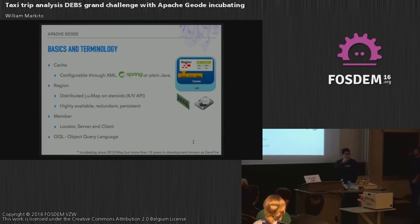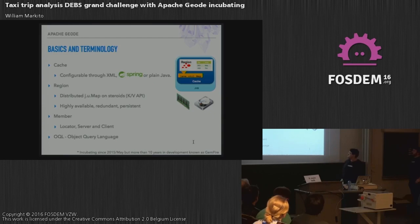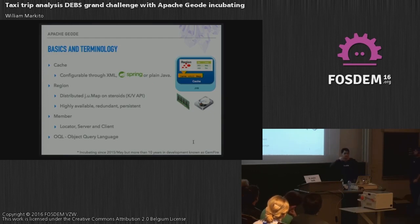Another way to summarize what Geo is: Geo is an open source project donated to ASF, it's currently incubating. The main concepts in a Geo system are a cache, a region, and a member.